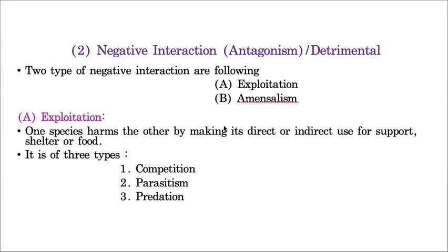These negative interactions are divided into two types: the first one is exploitation and the second one is amensalism. Exploitation means only one organism will be benefited and the other will be harmed, as one organism is depending upon another organism — maybe for food, support, or any other means — but in this association only one organism will be benefited ultimately and the other will be harmed. That is called exploitation.